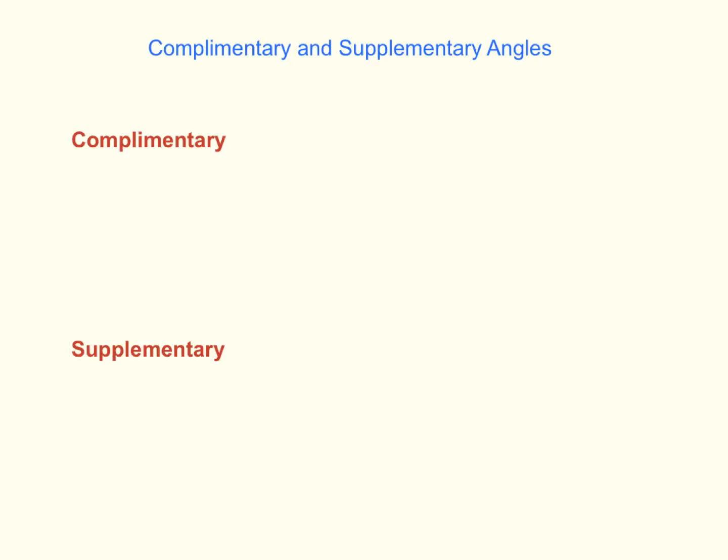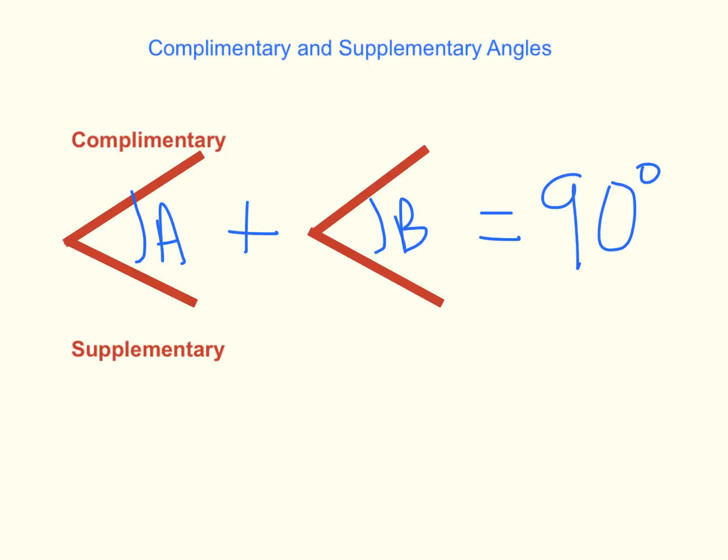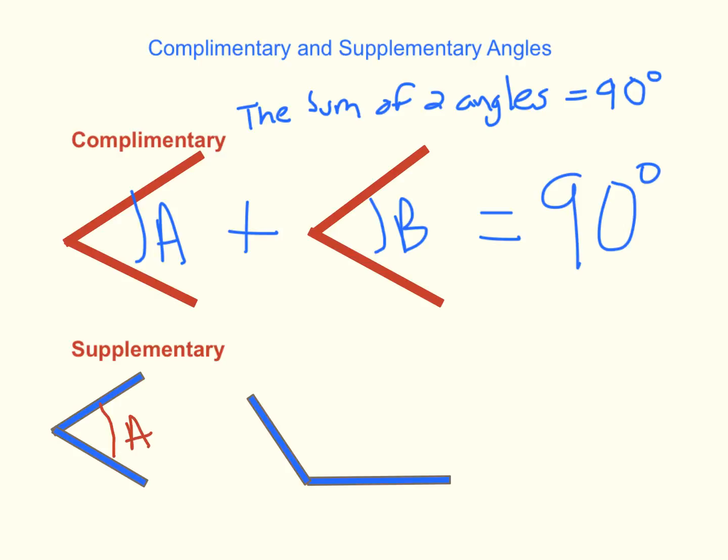Our last topic of this section are complementary and supplementary angles. These are how two angles relate to one another. Let's start with complementary. Complementary angles are when two angles, let's say angle A and angle B, add up to exactly 90 degrees. Now, supplementary is really similar to complementary, but it's where the sum of two angles, say angle A and angle B, is equal to 180 degrees.